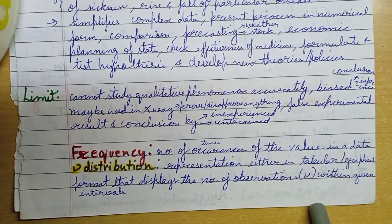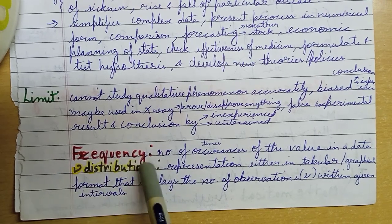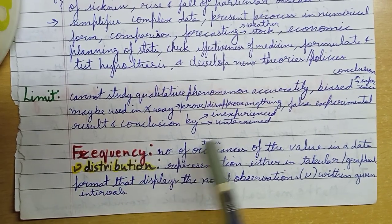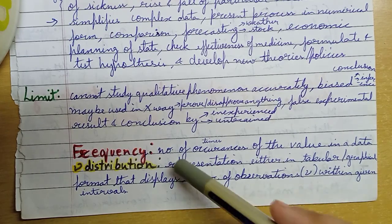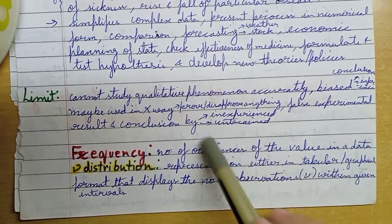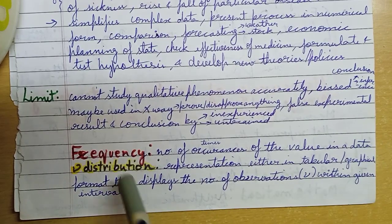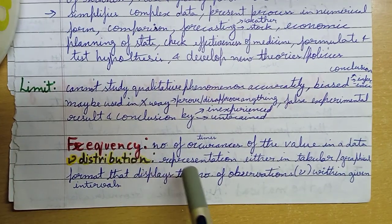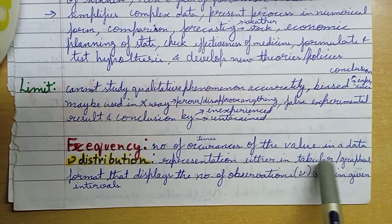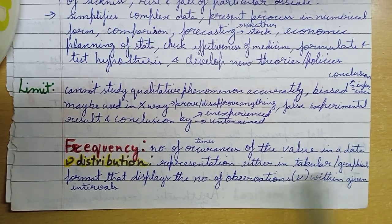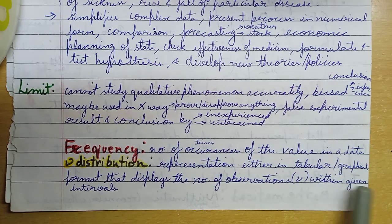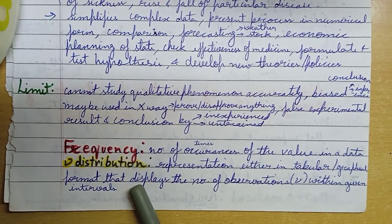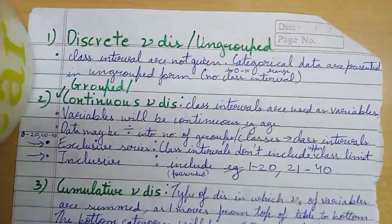Next, frequency distribution. The first thing is number of occurrences of a value in data - a particular value, how many times. Frequency distribution is the representation in tabular or graphical format which will display the number of observations within given intervals. Frequency distributions are of three types: